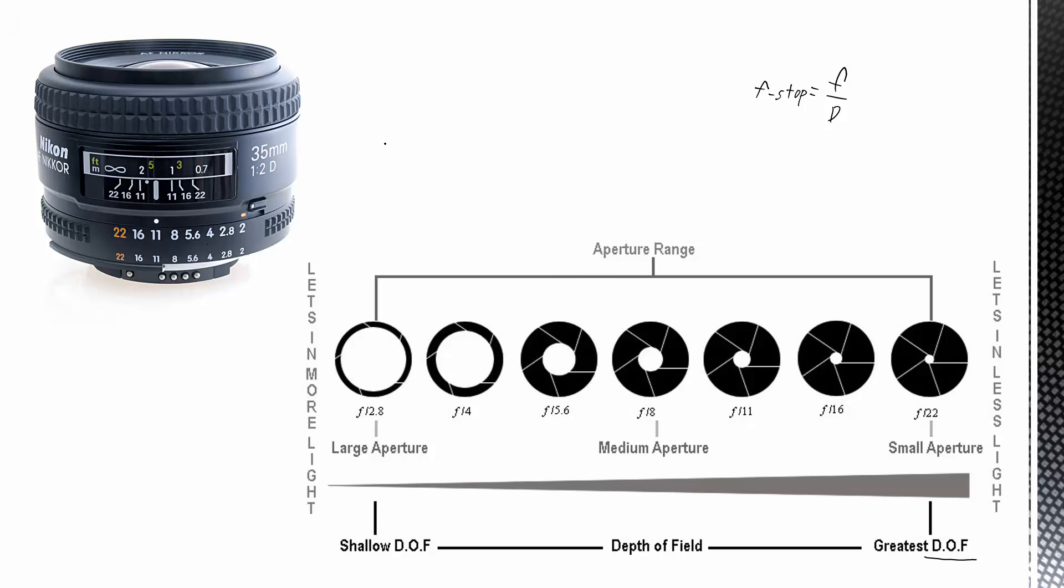So getting back to this exposure idea, the exposure of a photograph is proportional to the amount of light that reaches the film, and that's proportional to the area of the opening multiplied by the time that the shutter is open, and the area is proportional to the diameter squared. So the exposure is proportional to the diameter squared times the time, which is proportional to the time over the f-stop squared, because the f-stop is inversely proportional to the diameter.